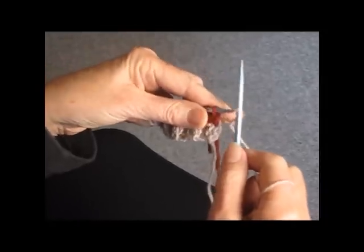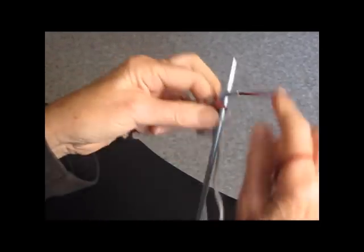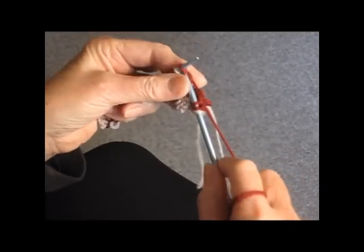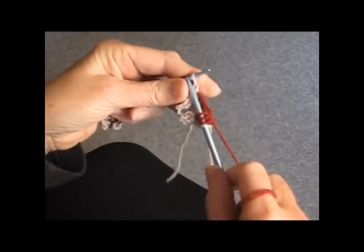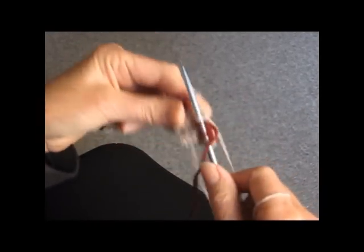This next row is going to be exactly the same, one the main color, three of the new color. So in other words, the first three rows are exactly the same.